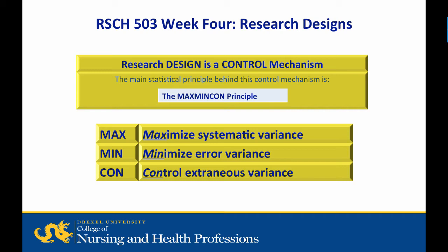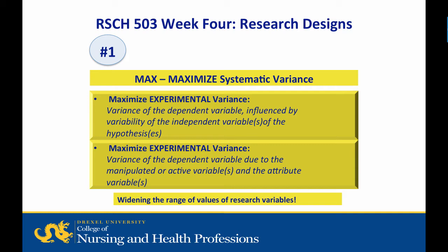Think of research design as a control mechanism. The statistical principle behind this control mechanism is the Max-Min-Con principle. Max stands for maximizing systematic variance. Min stands for minimizing error variance. Con stands for controlling extraneous variance. The MAX component involves maximizing systematic variance, which basically means widening the range of values of research variables through strong manipulations of the independent variables.